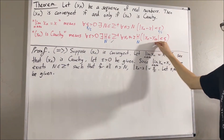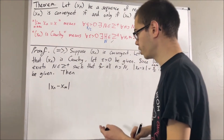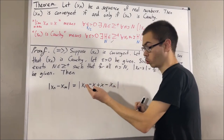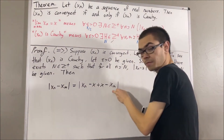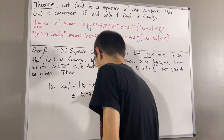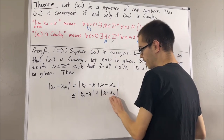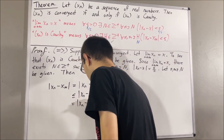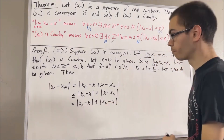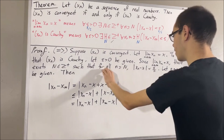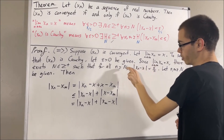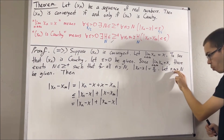Now we want to show that this inequality is true. So we'll start out by writing the left-hand side of this inequality. What we're going to do is add and subtract x. From here, we can apply the triangle inequality, which tells us that the absolute value of this entire thing is less than or equal to the absolute value of xn minus x plus the absolute value of x minus xm. The absolute value of x minus xm is equal to the absolute value of xm minus x. The point is that both of these are less than epsilon over two, because this inequality holds for every integer n greater than or equal to capital N.